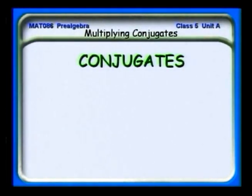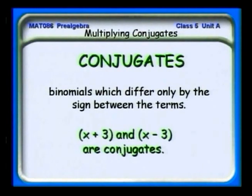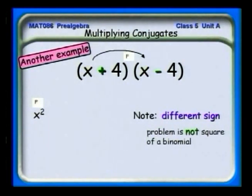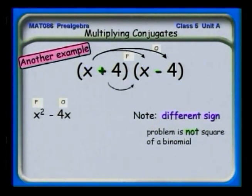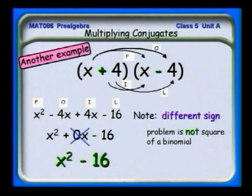Let's formalize that and talk about conjugates. Conjugates are binomials which differ only by the sign between the terms. For example, (x + 3) and (x − 3) are conjugates. Let's multiply (x + 4)(x − 4) — conjugates of each other. Using FOIL: the first gives x squared; the outer gives −4x; the inner gives +4x; the last gives −16. Since −4x + 4x = 0, the final result is x squared minus 16 — the square of the first minus the square of the second.